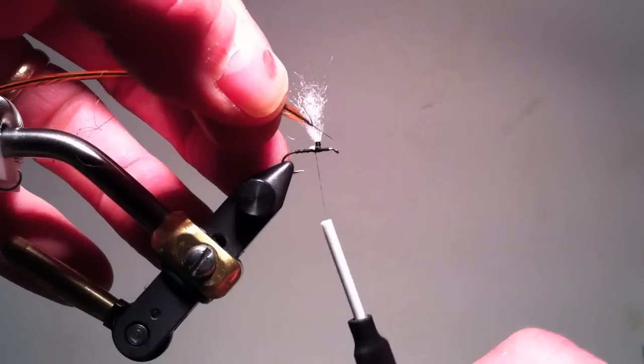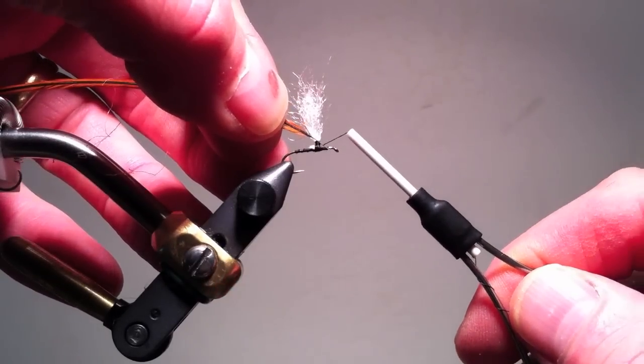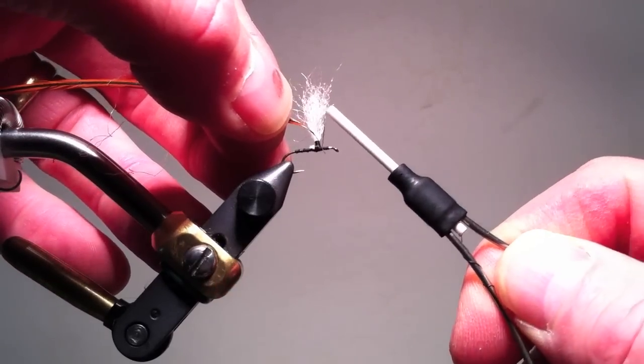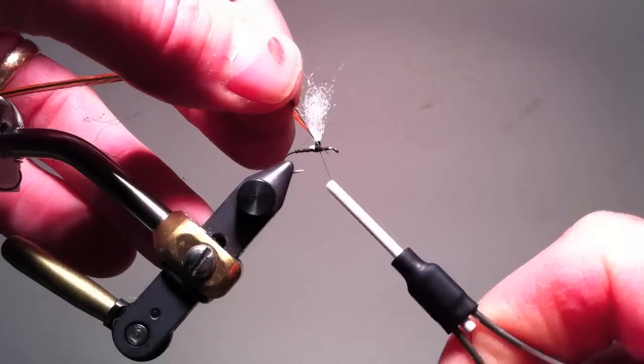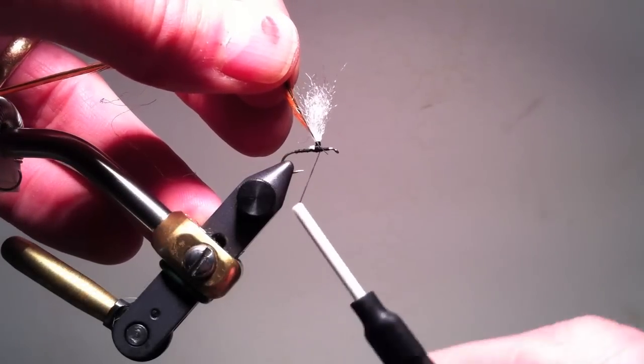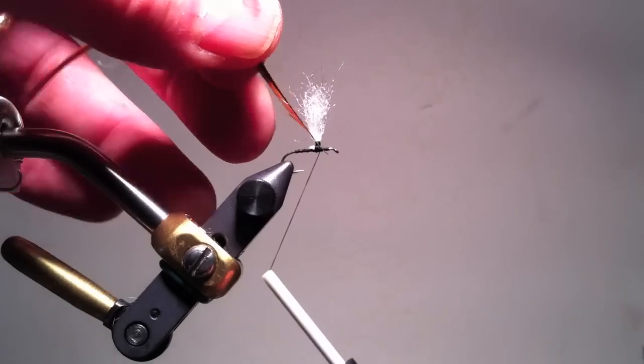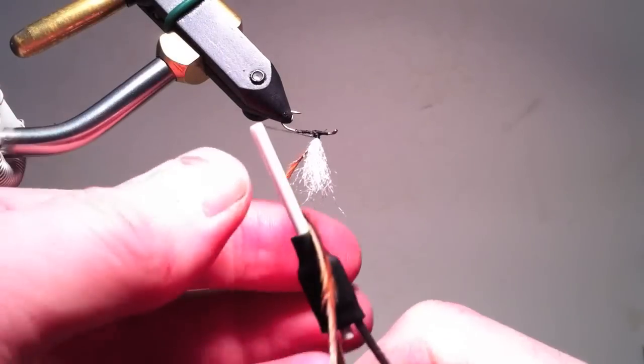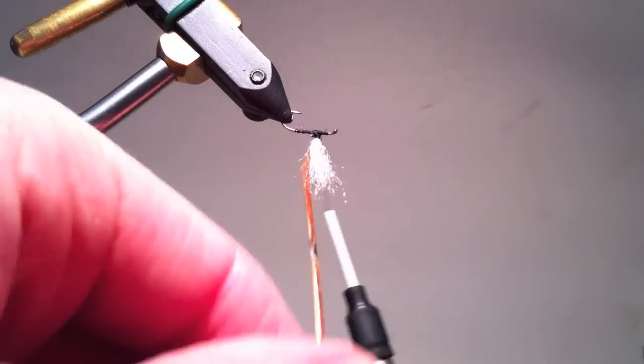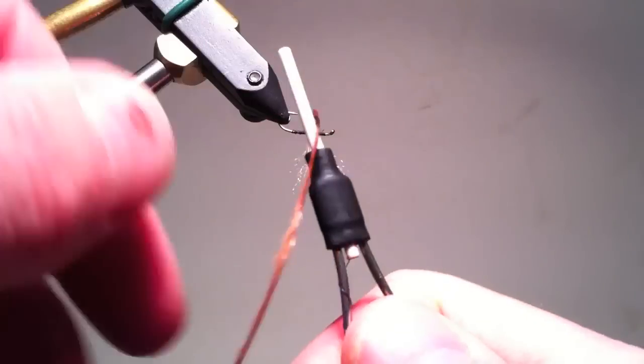The hackle I strip the base fibers from and tie it in front of the post bringing the thread then tight to the post. I like my hackle fibers to start at the upper end of the threaded base.